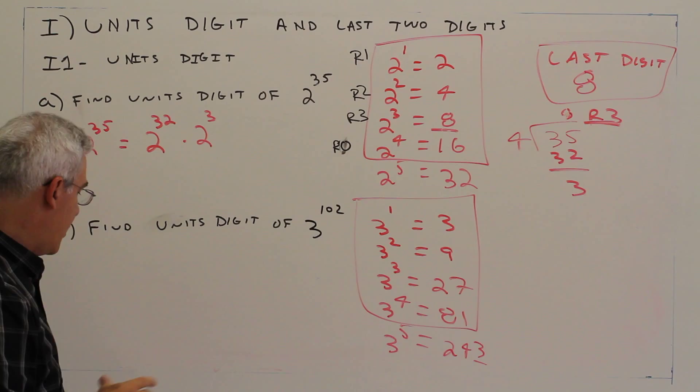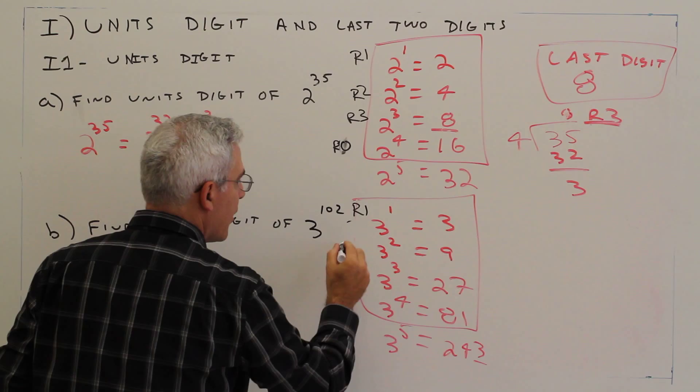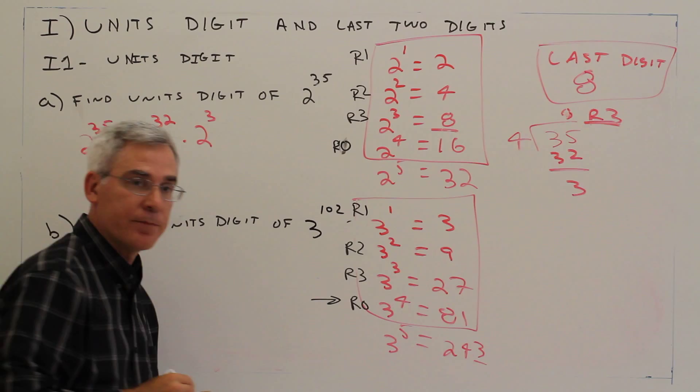Again, we have a cycle of 4, so I'll just do it the division way. Some people find that easier. This is remainder 1, remainder 2, remainder 3, remainder 0.